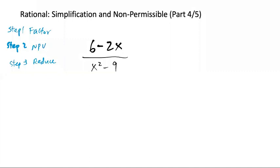Rational simplification and non-permissible, part 4. So now, step 1, we need to factor. So factor the top, factor the bottom.